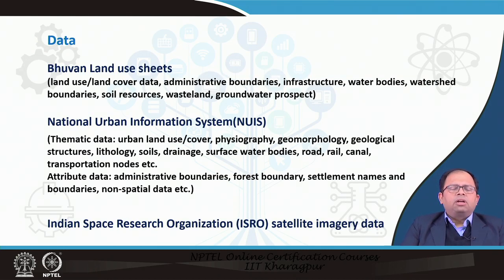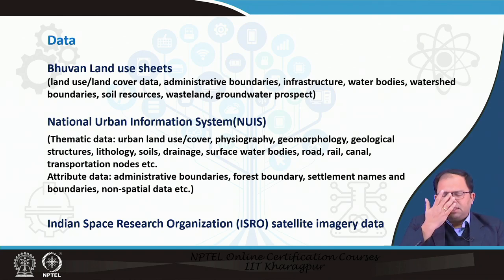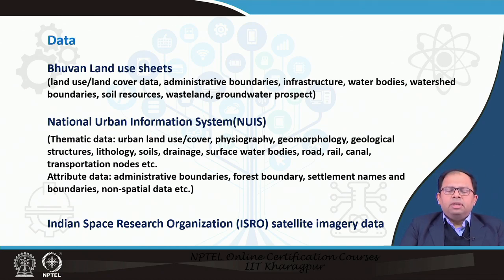There is a lot of free data available. For example, we have Bhuvan land use sheets from the Government of India, which contains land use data, land cover data, administrative boundaries, infrastructure data, water bodies, watershed boundaries, soil resources, and more. We also have the National Urban Information System database, which contains both map data and attribute data — including thematic data and attribute data.